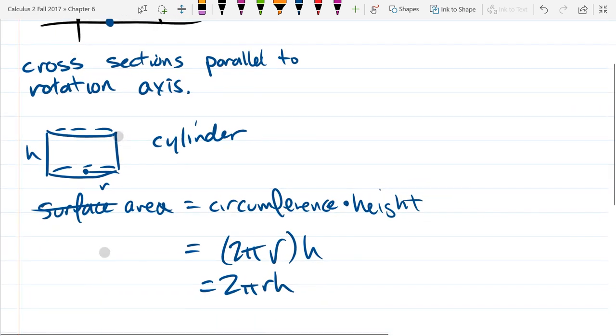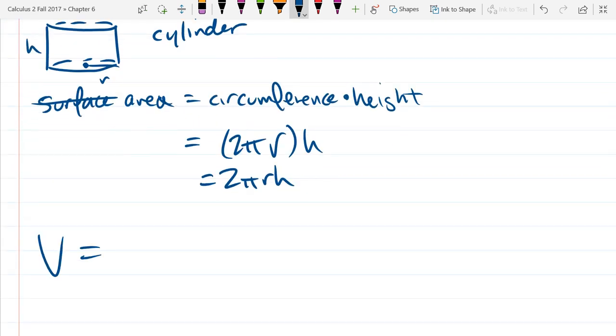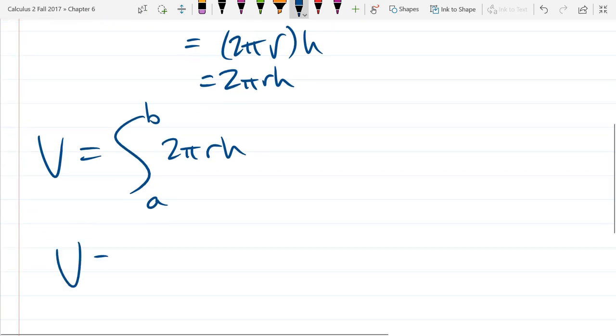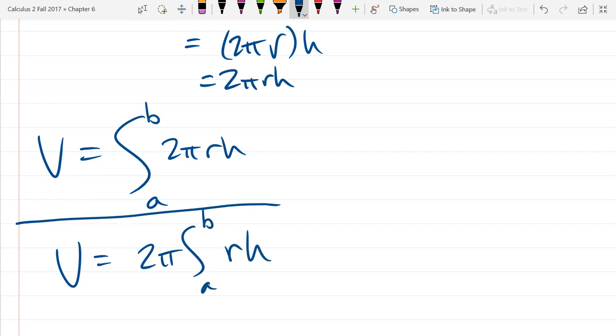So our volume is pretty easy to write down. Integral from some a to some b, 2πrh. And 2π is constant, so we'll bring that outside. So there is the volume we're going to use.